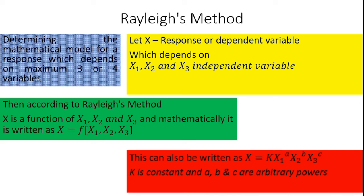Different workpiece materials have different noise levels, and based on that noise I can produce the K value. Every parameter has its own arbitrary power: X1 has arbitrary power A, and X2 is another parameter with arbitrary power B.